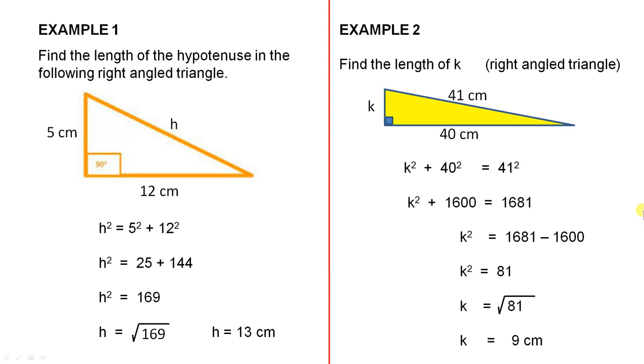So we've seen, with each of those examples, how you can use Pythagoras' theorem to either find the length of the hypotenuse, or the length of one of the other sides.